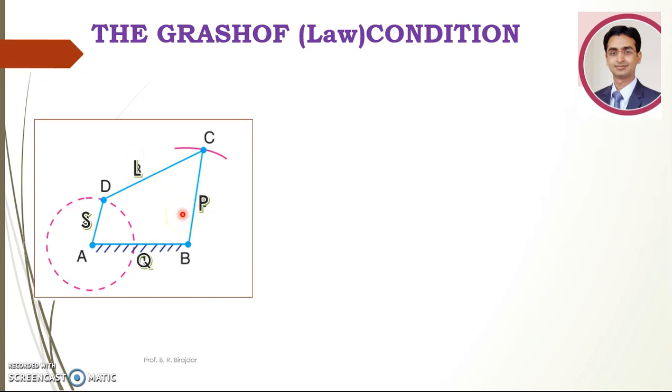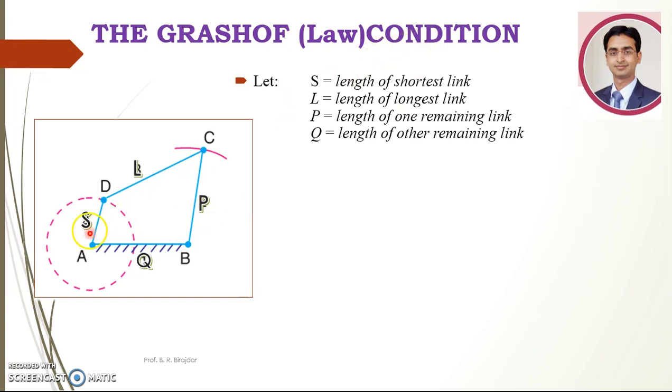Now what does Grashof's law state? Before that, S stands for length of the shortest link, L stands for length of the longest link, P is the length of one remaining link and Q is the length of the other remaining link. According to Grashof's law, the length of the shortest link plus length of the longest link should be less than or equal to the addition of the remaining two links. S plus L should be less than or equal to P plus Q. This is Grashof's condition.